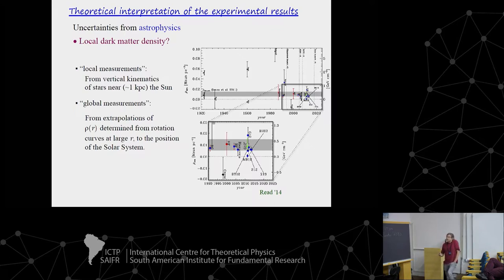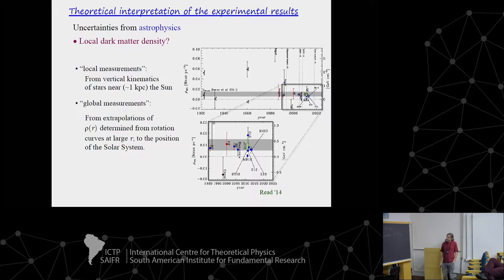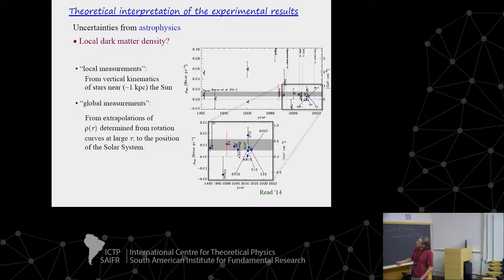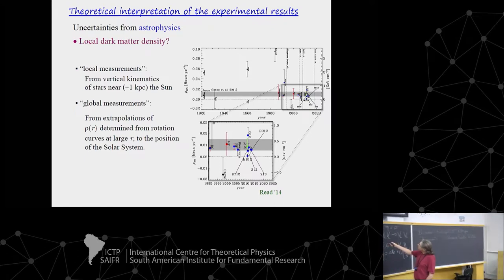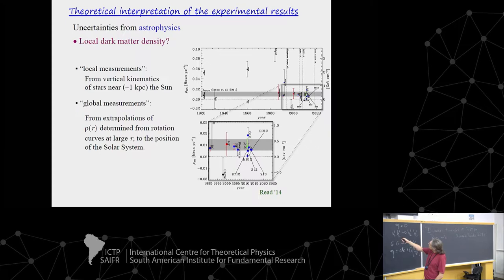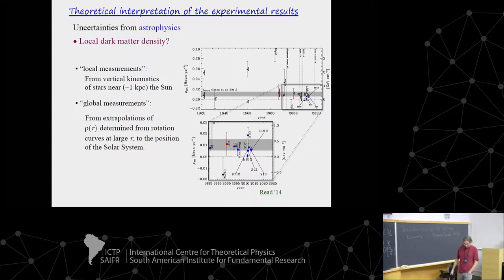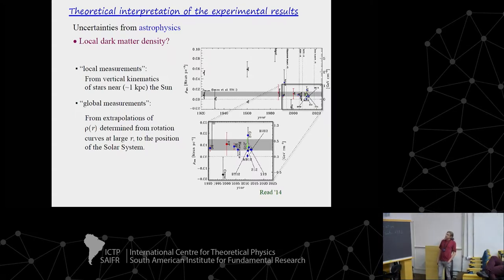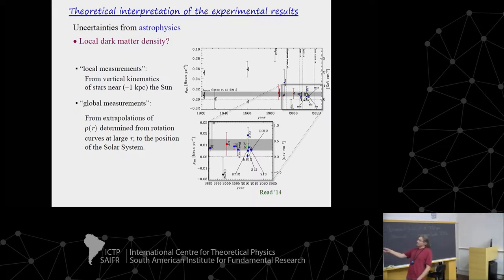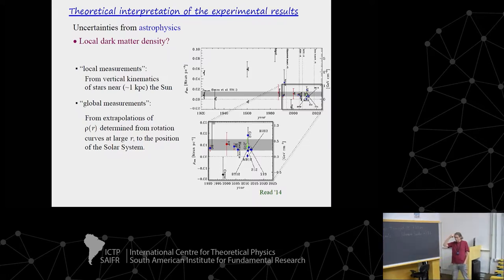The first astrophysical uncertainty concerns the local dark matter density. Two methods have been proposed: the first, called local measurements, is based on measuring the vertical kinematics of stars in the neighborhood of the sun. The latest measurements using this method give a local density of about 0.2–0.3 GeV per cubic centimeter, with some range depending on the tracer stars used. It is important to keep in mind that for astronomers 'local' means roughly one kiloparsec around the sun, which is very far from the scales relevant to direct detection.